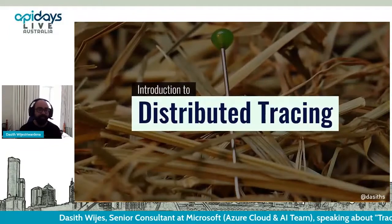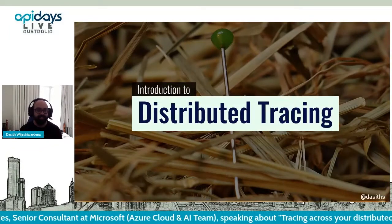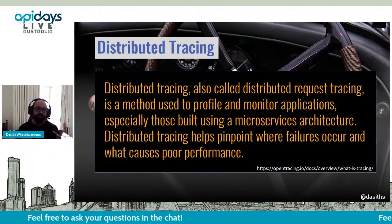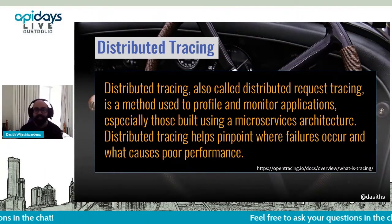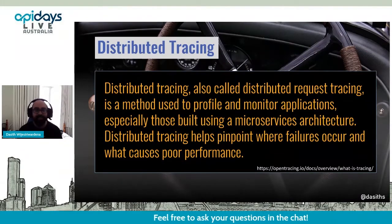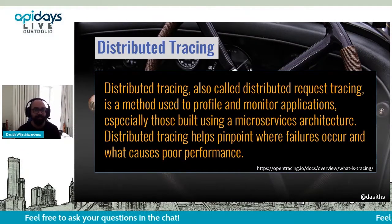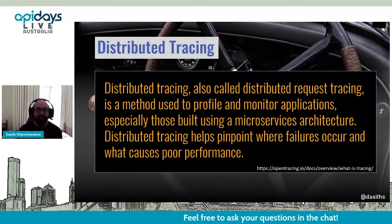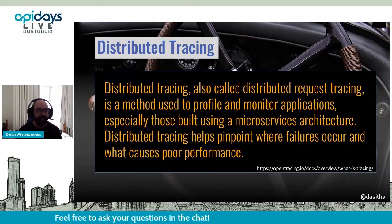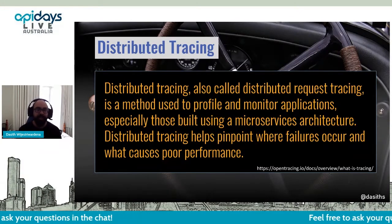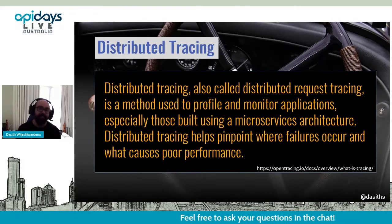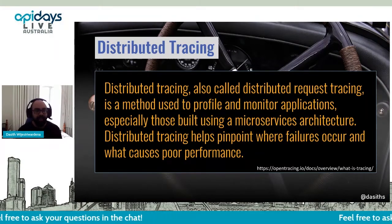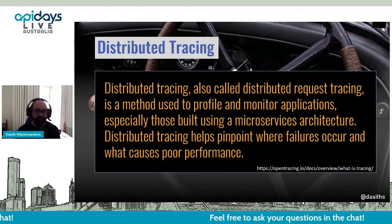Distributed tracing — let's set the context of what distributed tracing means in this environment. This is a definition I found on the OpenTelemetry website. It's short but very well put — it captures the essence of distributed tracing. The thing I want you to remember is we are building more distributed systems now than we did 10 years ago, especially with microservices-like architectures. And on a good day, it's difficult to diagnose and resolve availability or performance issues. On a bad day, nearly impossible.